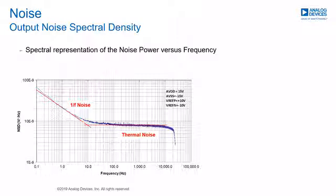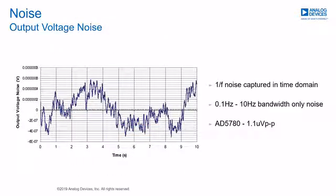The 1/f noise region, up to 10 Hz, and the thermal noise at higher frequencies are indicated in this graph. Previously measured only in the 0.1 Hz to 10 Hz frequency range, the plot shown is the peak-to-peak noise for the AD5780 18-bit DAC, with an output voltage noise of 1.1 microvolt peak-to-peak.